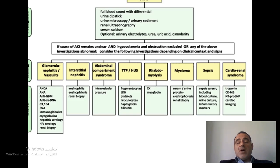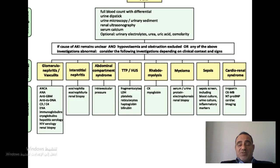If multiple myeloma is suspected as the cause of myeloma kidney, we perform serum and urine protein electrophoresis, and renal biopsy is very helpful. For suspected sepsis as a cause of kidney injury, we perform a full septic screen including pan-cultures: blood culture, urine culture, wound cultures, CSF culture, and bronchoalveolar lavage cultures. We also measure inflammatory markers such as ESR, CRP, and in some conditions, procalcitonin.